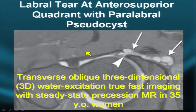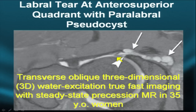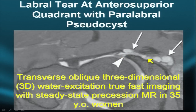In the axial projection we see a labral tear, remembering that at the eight o'clock position anteriorly there is often a small thin but non-full-thickness cleft. A transverse 3D water excitation true fast imaging sequence with steady-state free precession in a 35-year-old woman shows a cyst arising from a full-thickness tear in the anterior labrum — similar to a paralabral meniscal cyst around the knee or shoulder — with dissecting cysts dissecting anteromedially from this through-and-through labral tear.